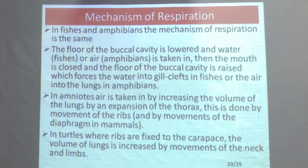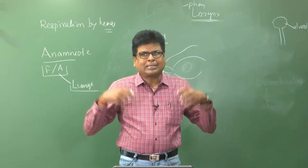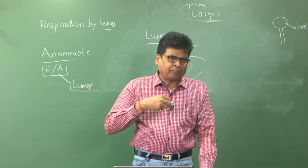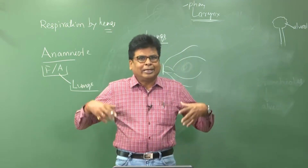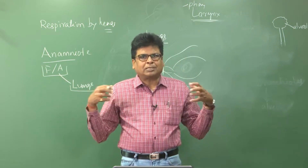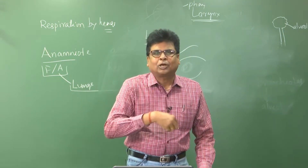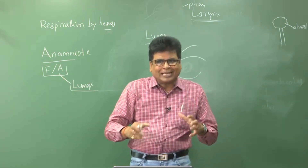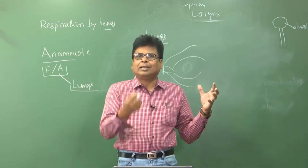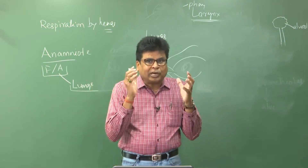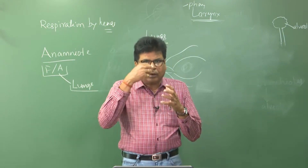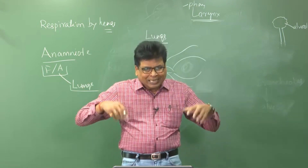In amniotes, air is taken in by increasing the volume of the lungs through expansion of the thorax, done by movement of the ribs. In turtles, where ribs are fixed to the carapace, the volume is increased by movement of the neck and limbs. When the chest expands, the thoracic cavity volume increases and pressure decreases, so atmospheric air rushes in. When the thoracic cavity contracts, air comes out. Air never enters the cavity by its own pressure — rather, the chest creates the pressure differential.